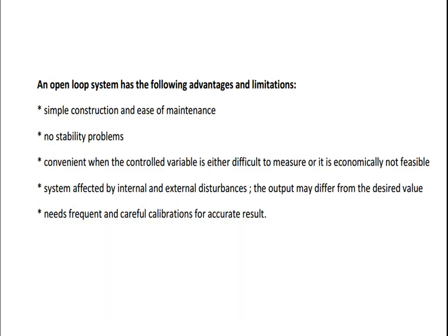Advantages and limitations of open loop systems: it is very simple to construct and very easy to maintain as there are no complicated elements to track and trace. There is no stability problem in open loop systems. It is convenient when the control variable is either difficult to measure or economically not feasible. However, the system is affected by internal and external disturbances and the output may differ from the desired value. It needs frequent and careful calibration for accurate results.